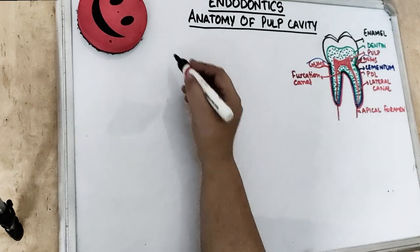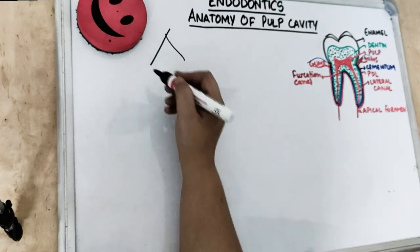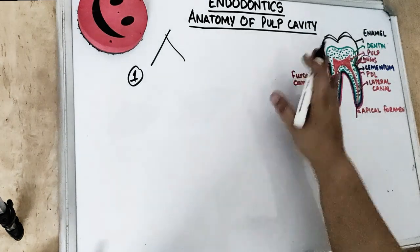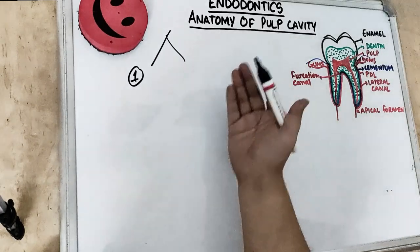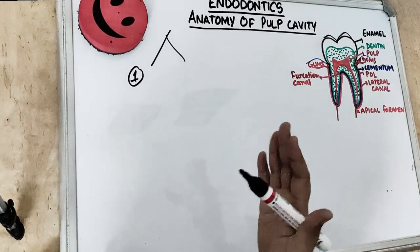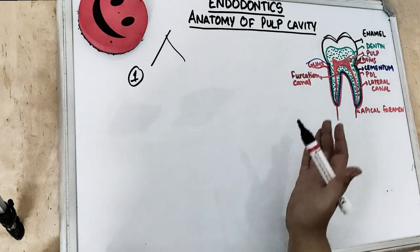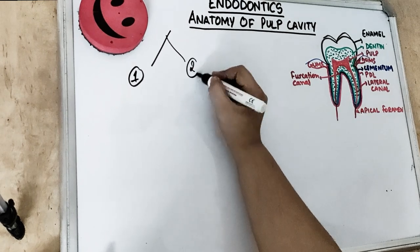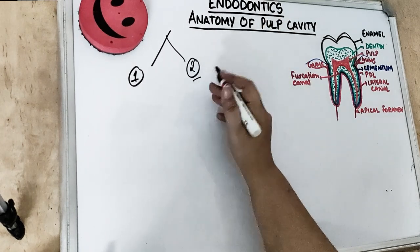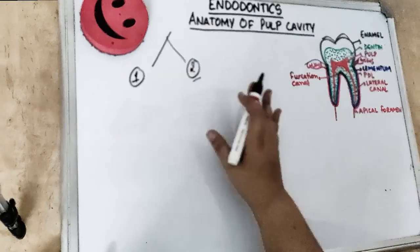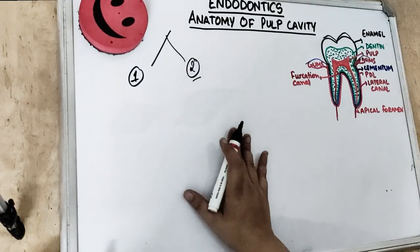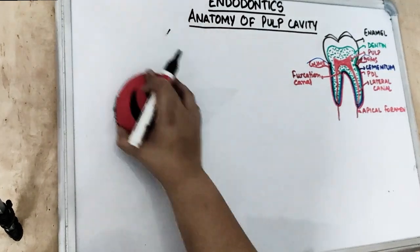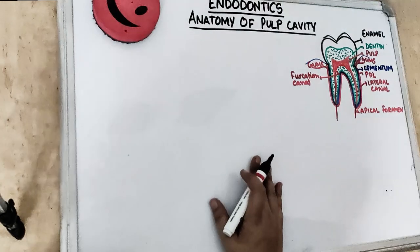Talking about the anatomy of pulp cavity, we will be covering it in two parts. Today's video will cover the anatomy of the pulp cavity — everything about the pulp, basically the anatomy of the pulp, the roof, apical foramens, and a little bit of histology of pulp. In the second part, we will study all the classifications — the Vertucci classifications, the Weine classification, as well as the classification of the isthmus.